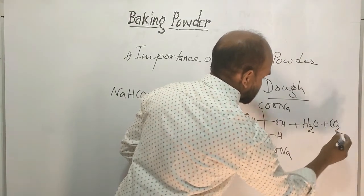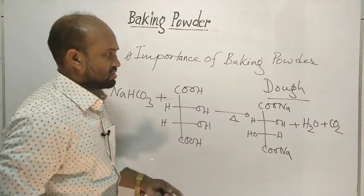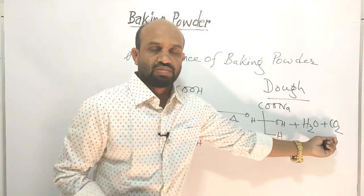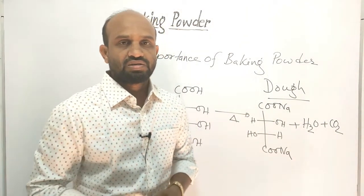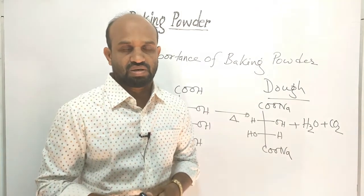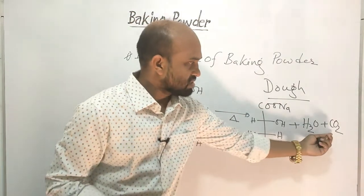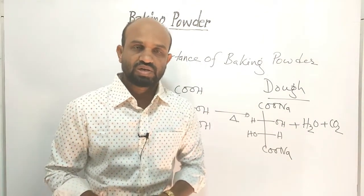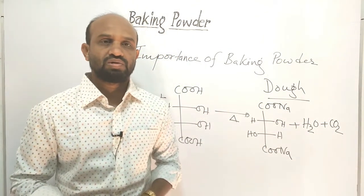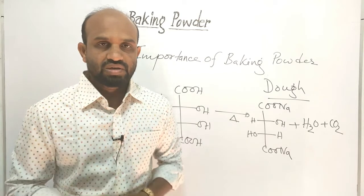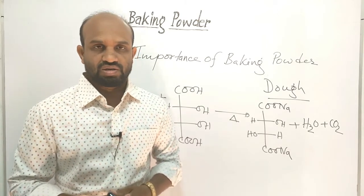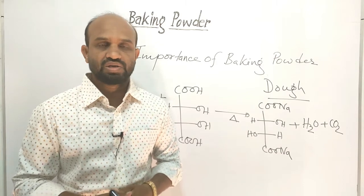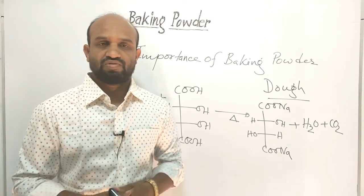Carbon dioxide is also released. The sodium tartrate salt and carbon dioxide make the cakes and breads rise up. This is the importance of baking powder — it is used to make bread and cakes raise up, and because of this carbon dioxide, bread and cakes become spongy and fluffy.